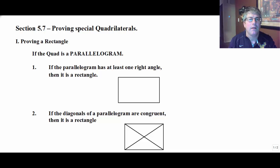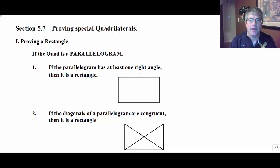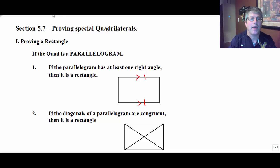Let's begin by proving a rectangle. Our quadrilateral is already a parallelogram — we've already established that. And we want to prove that that parallelogram is a rectangle, so we know all the properties of the parallelogram apply. We might have something like this: with one pair of opposite sides both parallel and congruent — that's a parallelogram. If the parallelogram has at least one right angle, and we've previously proven it's a parallelogram, then we know for sure it's a rectangle.